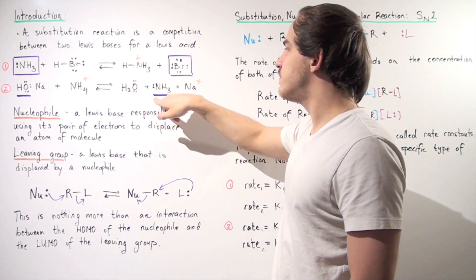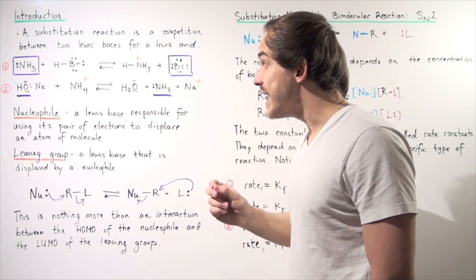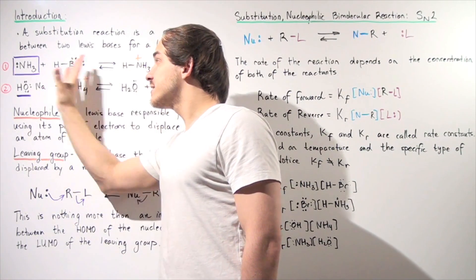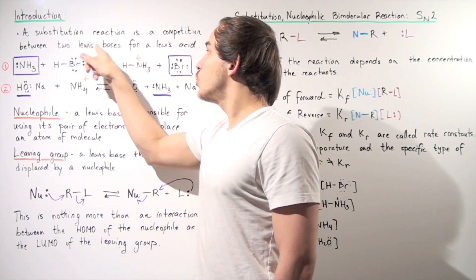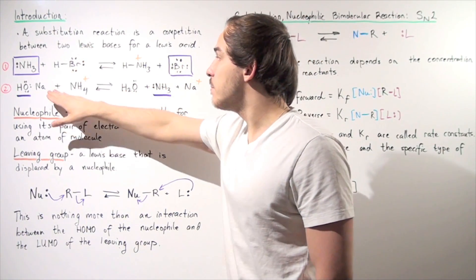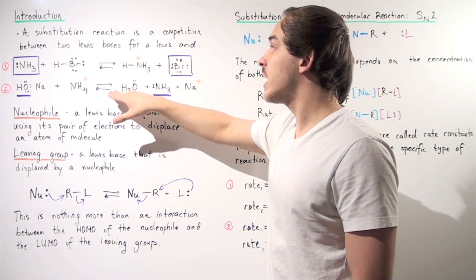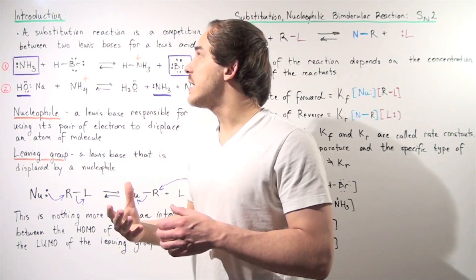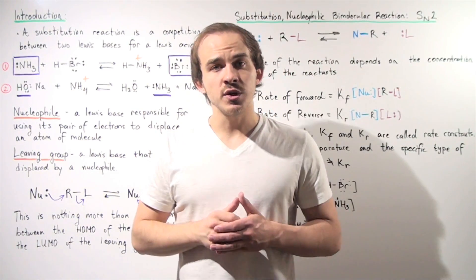So we have water, we have ammonia, and we have this sodium ion. This is our Lewis base on the reactant side. This is our Lewis base on the product side. Our Lewis acid is this H ion found on ammonia here and found on the water or hydroxide molecule here.